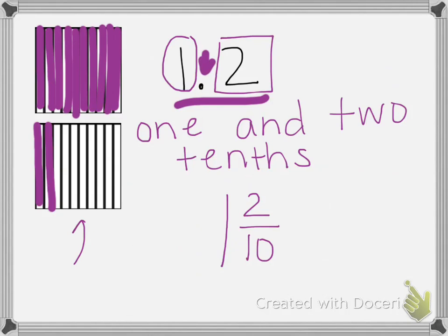So that shows this one. So our 1 whole is our top shape that's colored all the way in and 2 tenths is the one that just has part of it colored in.